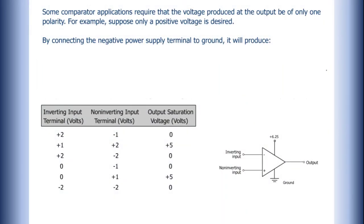Some comparator applications require that the voltage produced at the output be of only one polarity. For example, suppose only a positive voltage is desired.